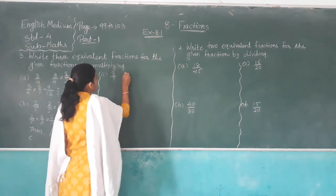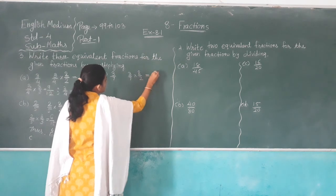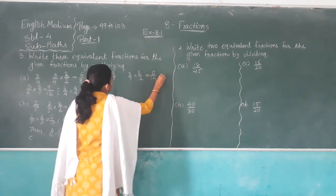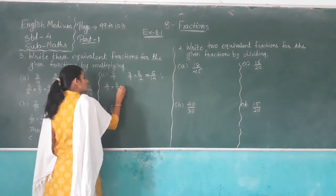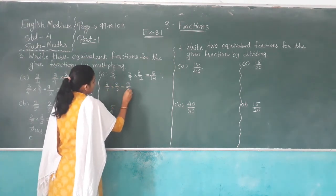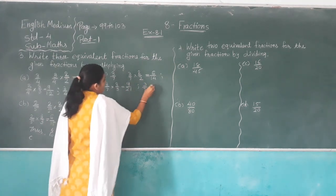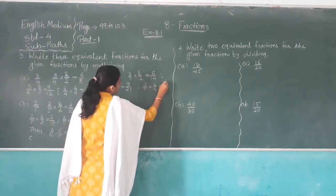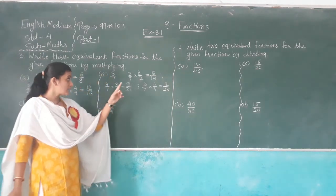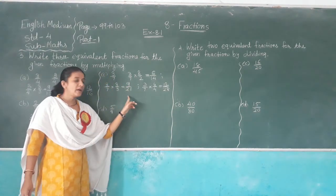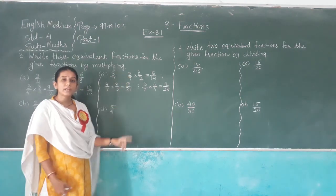Three out of seven multiplied by two over two: two times three is six, seven times two is fourteen. Three out of seven multiplied by three over three: three times three is nine, seven times three is twenty-one. Three out of seven multiplied by four over four: three fours are twelve, seven fours are twenty-eight. So six out of fourteen, nine out of twenty-one, and twelve out of twenty-eight are equivalent fractions of three out of seven.